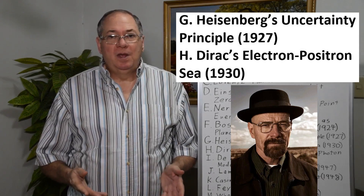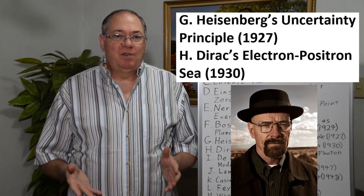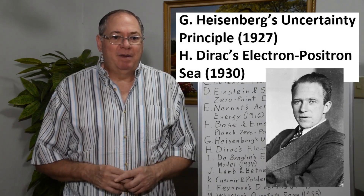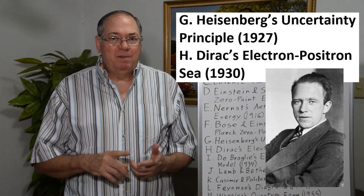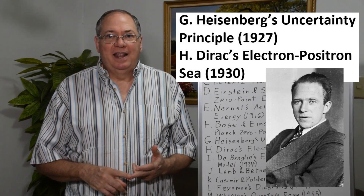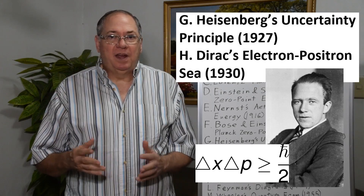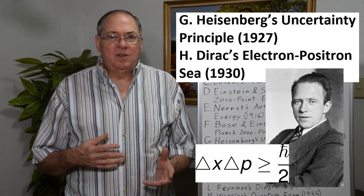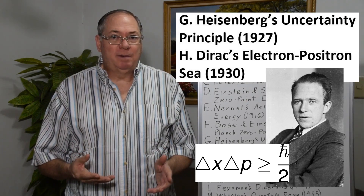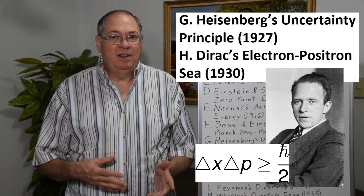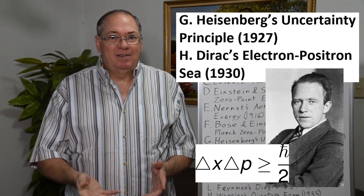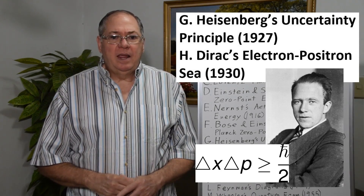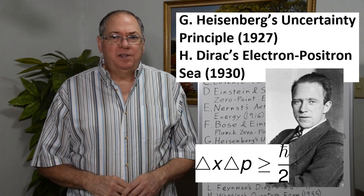Next there's Heisenberg's uncertainty principle, which is sort of flipping around Planck's oscillator math to say that you can't measure the position and the momentum of an object at the same time with great accuracy when it's at low energy. This is sometimes used as a major explanation of the zero-point field, although the zero-point field was already discovered and understood well before that. He won the Nobel Prize in 1932 for this work.